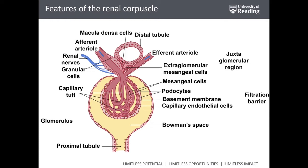The arterial blood comes at high pressure through the afferent arteriole, entering the Bowman's capsule. This is the capillary tuft receiving high-pressure blood, converging again into the efferent arteriole. The arterial blood entering at high pressure undergoes turbulent movement and gets filtered at high pressure.